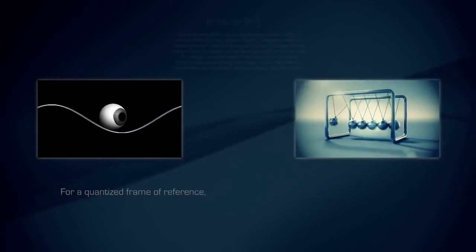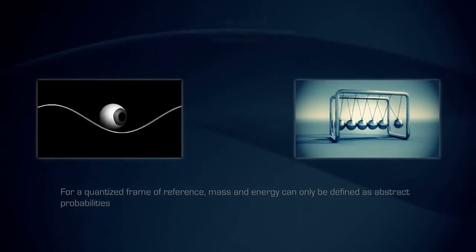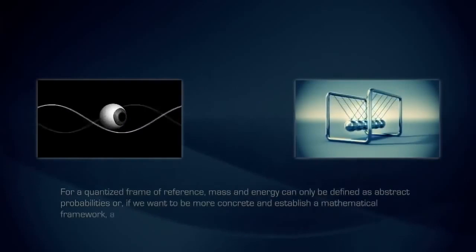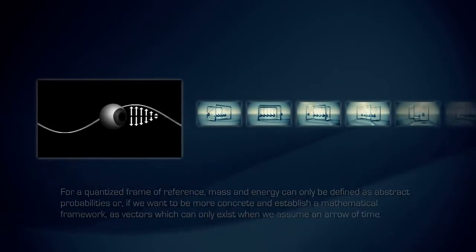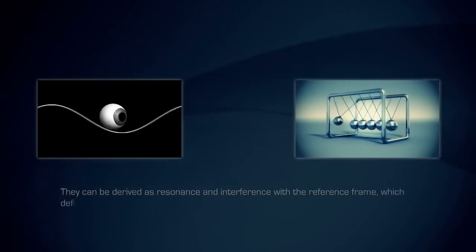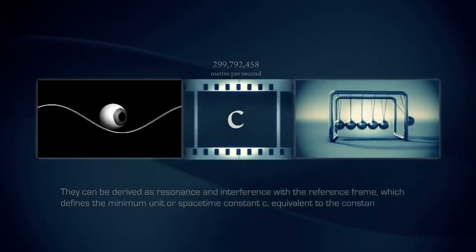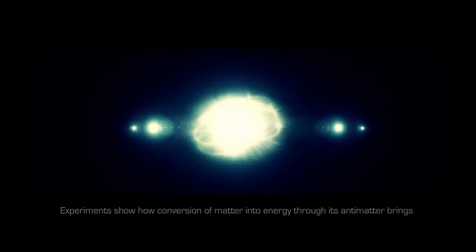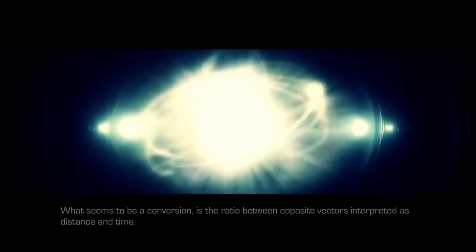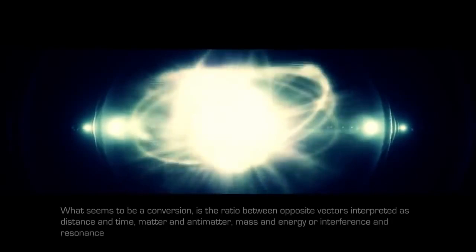For a quantized frame of reference, mass and energy can only be defined as abstract probabilities, or if we want to be more concrete and establish a mathematical framework, as vectors which can only exist when we assume an arrow of time. They can be derived as resonance and interference with the reference frame, which defines the minimum unit or spacetime constant C, equivalent to the constant of Planck in quantum mechanics. Experiments show how conversion of matter into energy through its antimatter brings about gamma rays with exact opposite momentum. What seems to be a conversion is the ratio between opposite vectors interpreted as distance and time, matter and antimatter, mass and energy or interference and resonance within the abstract arrow of time of C.